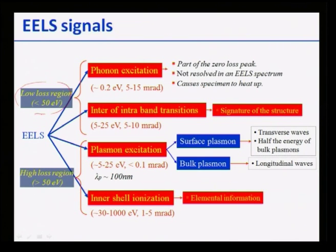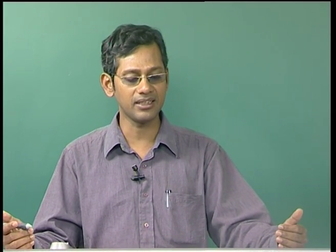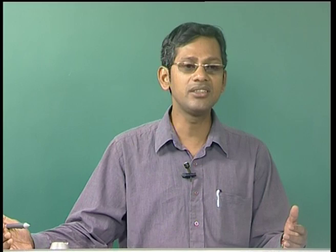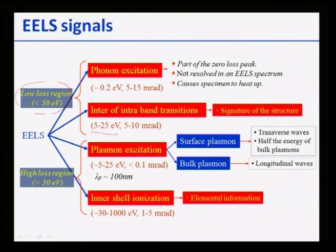The second important thing which happens in the low loss region is called intraband or interband transitions between electrons. As you know, electrons move in orbitals in atoms. When an electron coming from a high energy source like an electron microscope applies its energy to eject certain electrons from one shell, that place becomes vacant, and this can lead to inter- or intraband transitions. These can give us a signature of the structure of the material, as electronic energies are proportional to the type of atom or element, and they happen in the energy range of 5 to 25 electron volts.